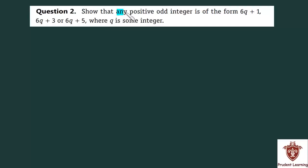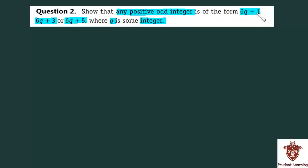Show that any positive odd integer is of the form 6q plus 1, 6q plus 3, or 6q plus 5, where q is some integer. In this question we have to prove that any positive odd integers can be represented in the form 6q plus 1, 6q plus 3, or 6q plus 5, where q is some integer.